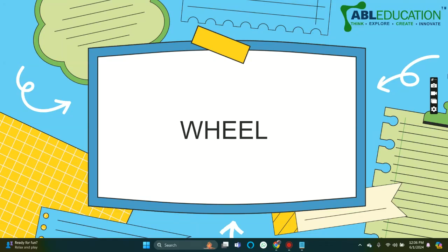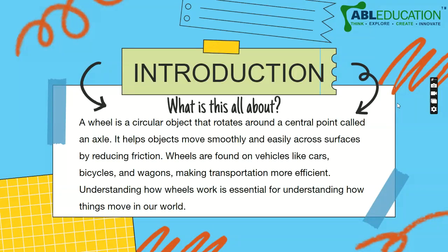Hello and welcome everyone to a Makanzo video series. Today we are going to talk about the wheel. A wheel is a circular object that rotates around a central point called an axle. It helps objects move smoothly and easily across surfaces by reducing friction.